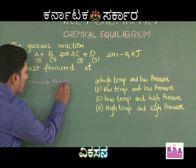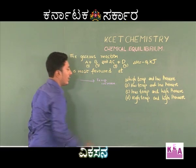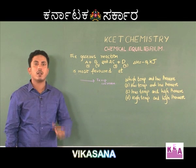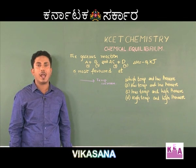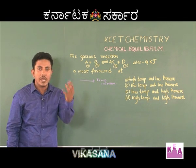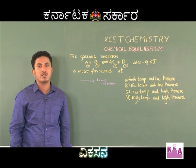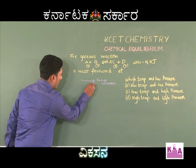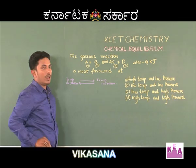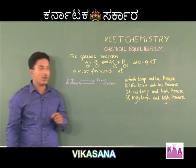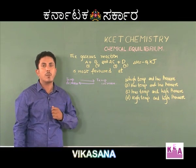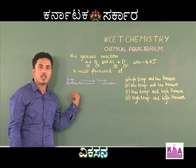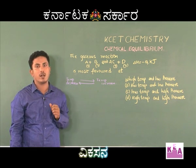I will write it as: temperature increases for the forward reaction. If the forward reaction is exothermic, then the backward reaction will be endothermic in nature. Hence heat will be absorbed and the temperature of the system decreases. So for the given reaction, the forward reaction is accompanied by increase in temperature and the backward reaction is accompanied by decrease in temperature.